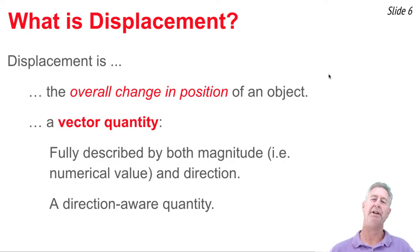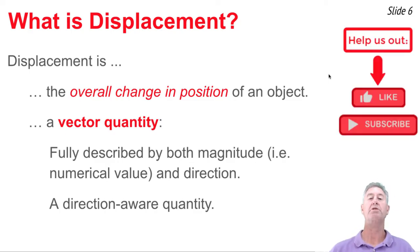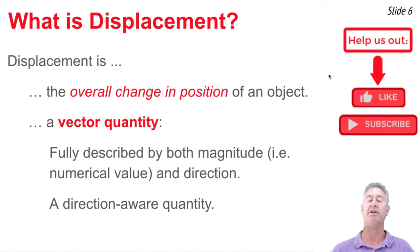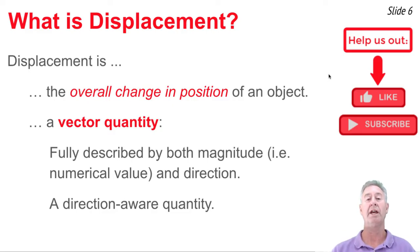Now we're going to begin our discussion of displacement. Displacement is defined as the overall change in position of an object. You find out what its initial position is, you find out what its final position is, and you determine the overall change. Displacement is a vector quantity, and when calling something a vector quantity in physics, we mean it's a quantity that's fully described by two things: magnitude and direction. It's a direction-aware quantity.